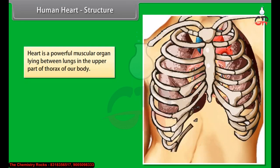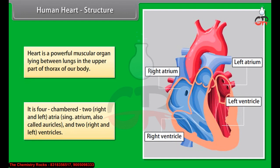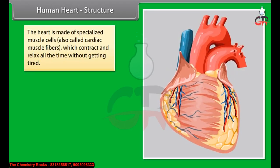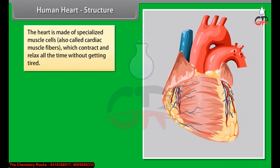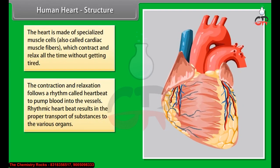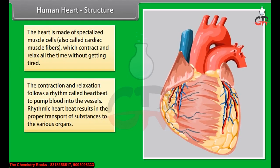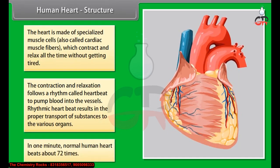The heart is a powerful muscular organ lying between the lungs in the upper part of the thorax. It is four-chambered: two right and left atria (also called auricles) and two right and left ventricles. The heart is made of specialized cardiac muscle fibers which contract and relax continuously without getting tired. This rhythmic heartbeat pumps blood into the vessels. In one minute, the normal human heart beats about 72 times.